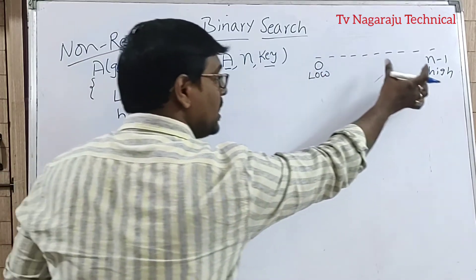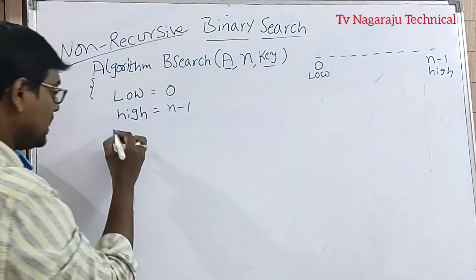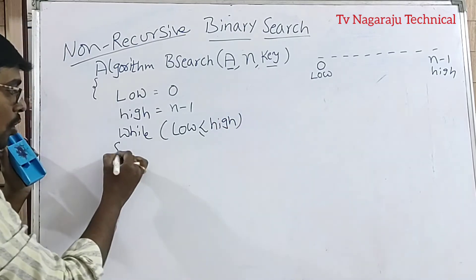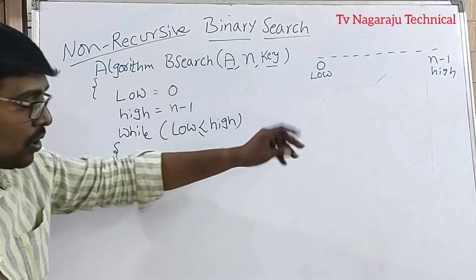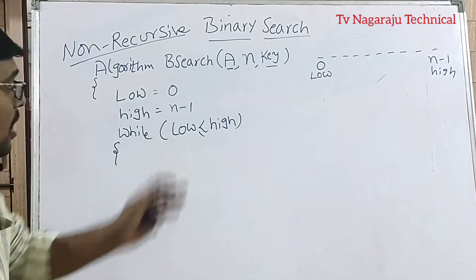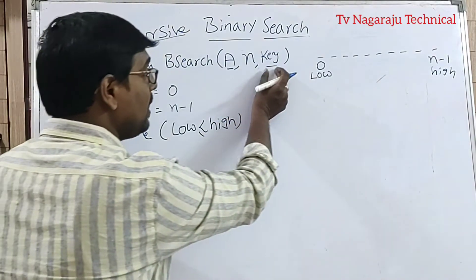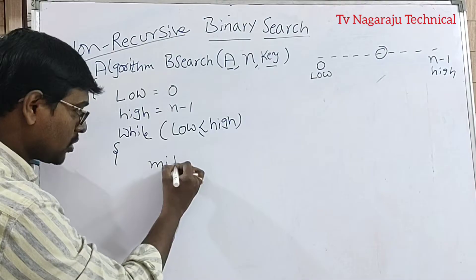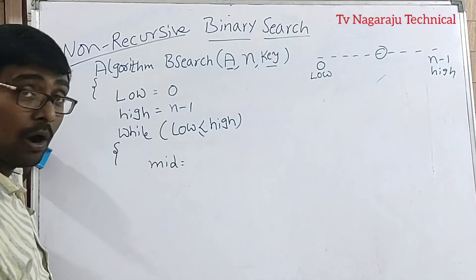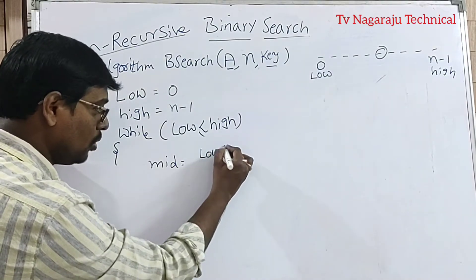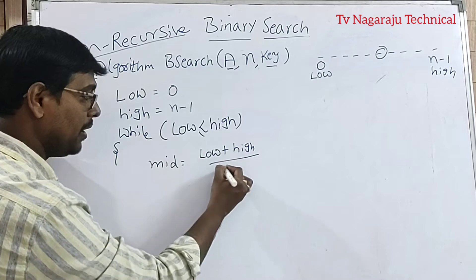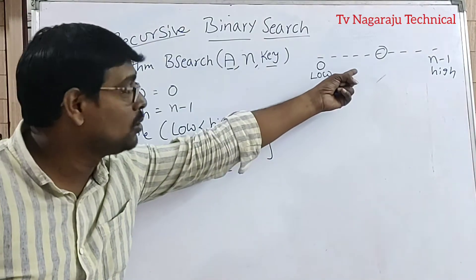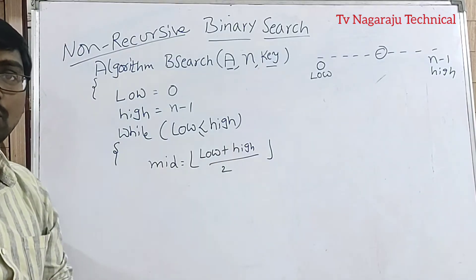We traverse elements either to the left side or right side. The entire process is repeated while low is less than or equal to high. The first step is to calculate the mid value. The mid index is equal to floor of (low plus high) divided by 2. The floor symbol is used because, for example, floor of 2.5 equals 2 — there is no index 2.5. So mid contains the middle position index.